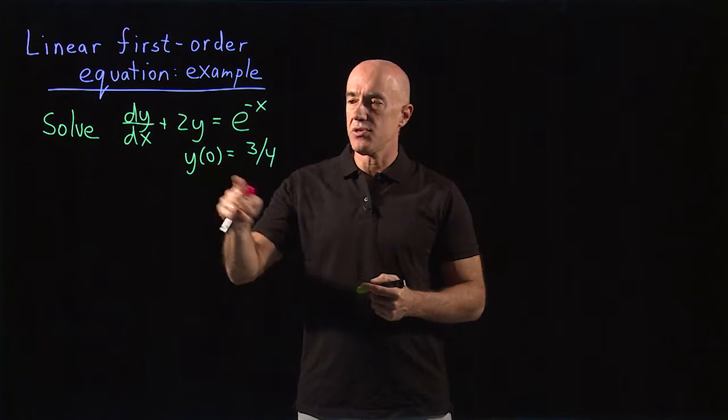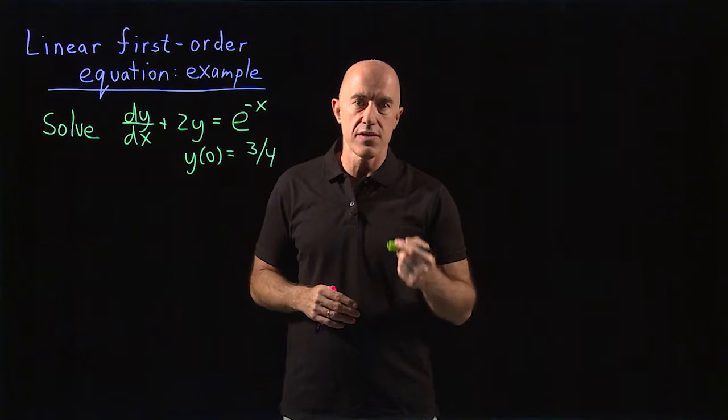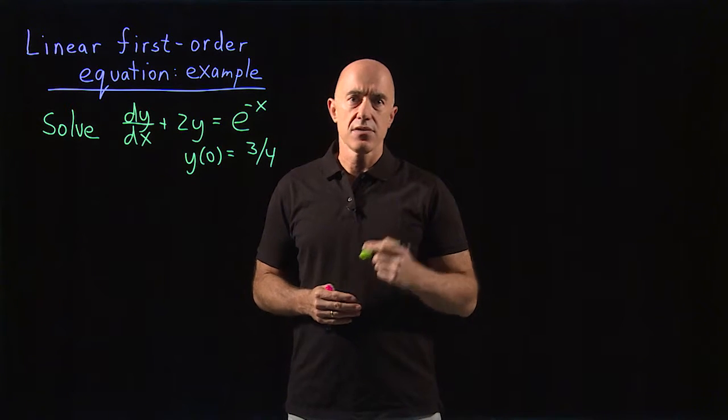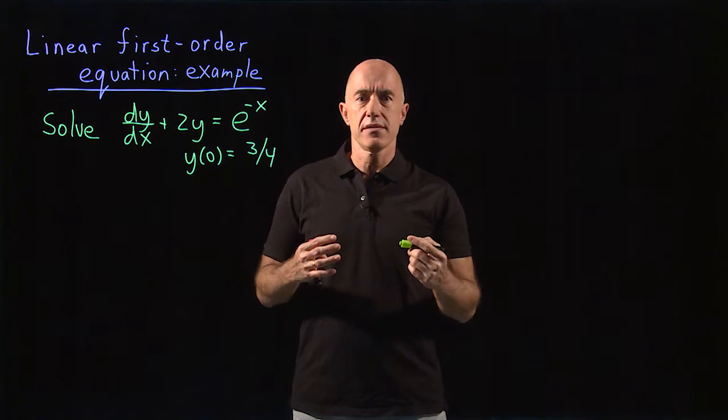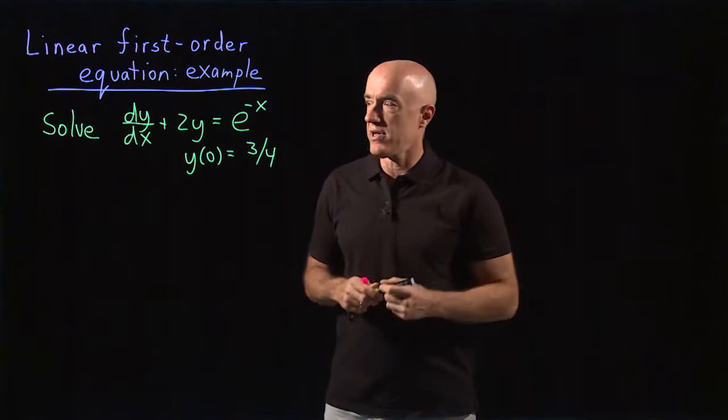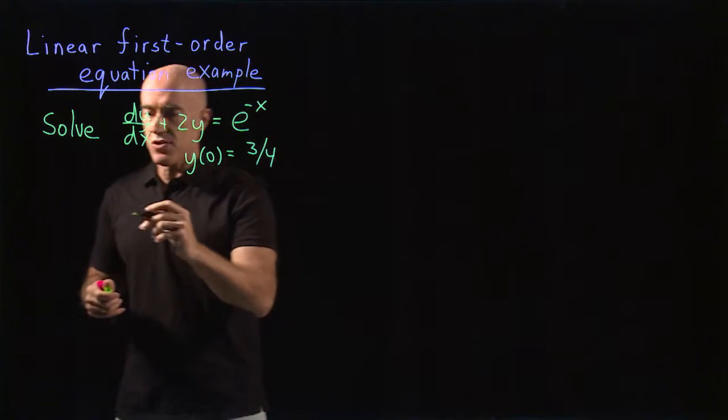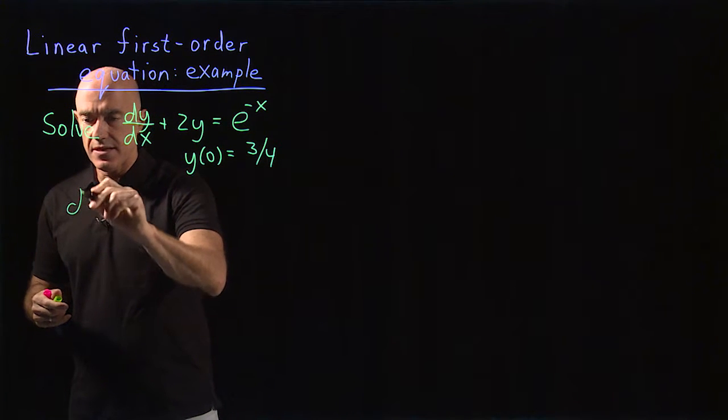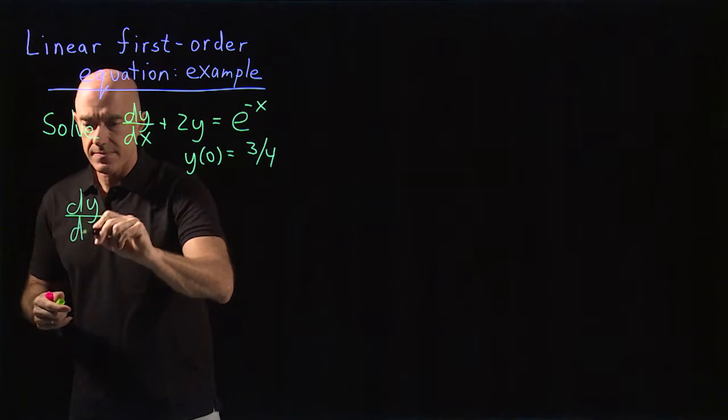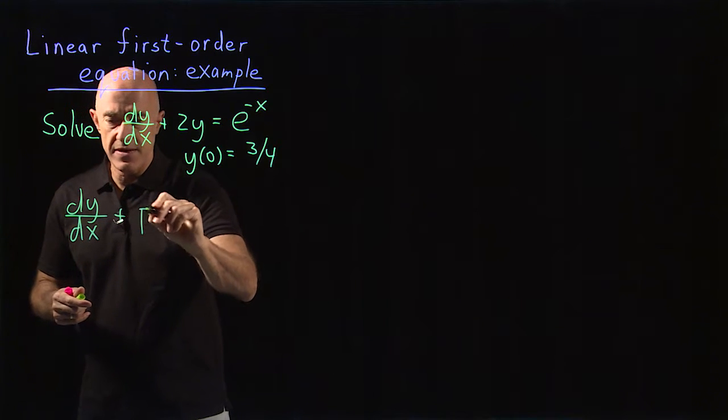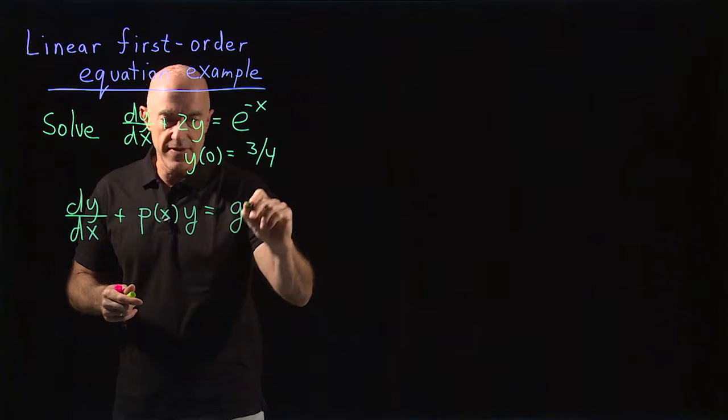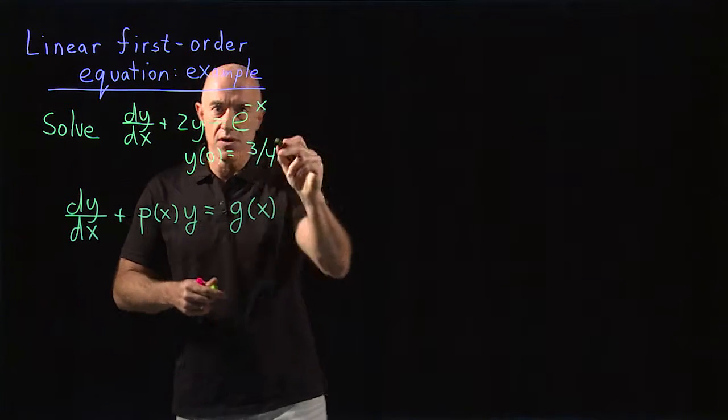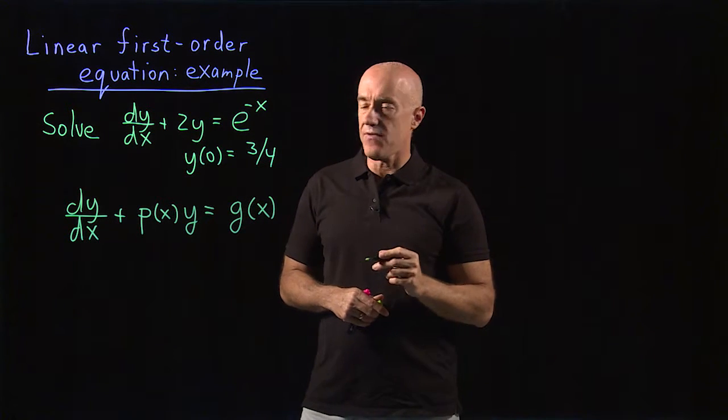And we have the initial condition y(0) = 3/4. So let's remember what the formula is for solving a linear first-order equation. The standard equation is dy/dx + p(x)y = g(x). Our example equation is in that form.